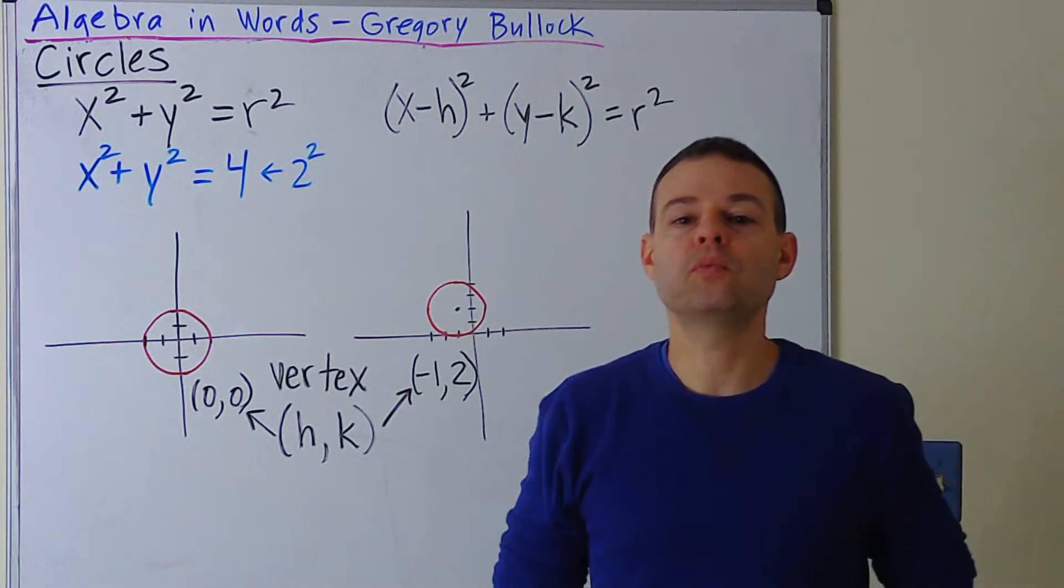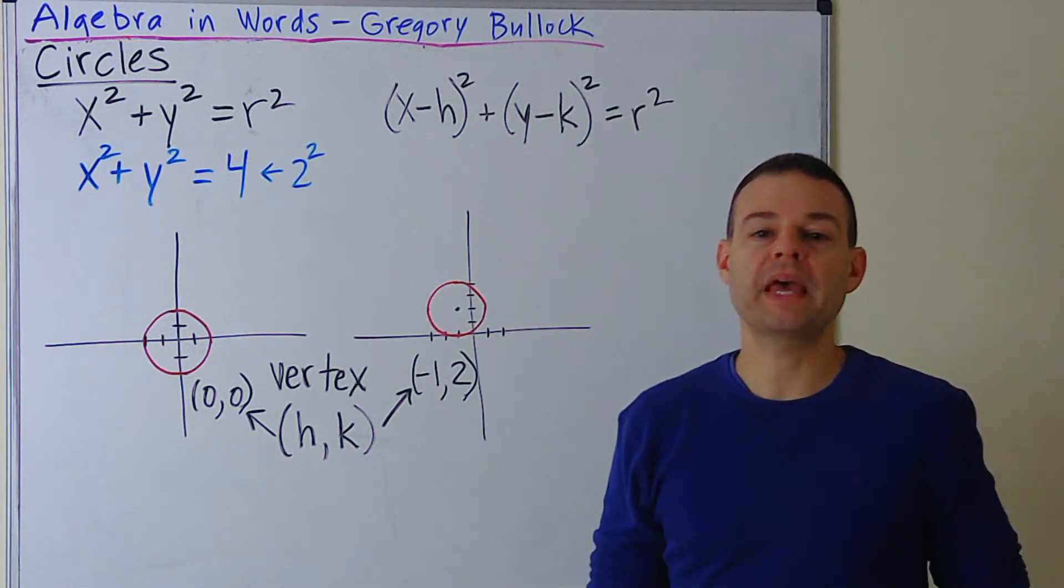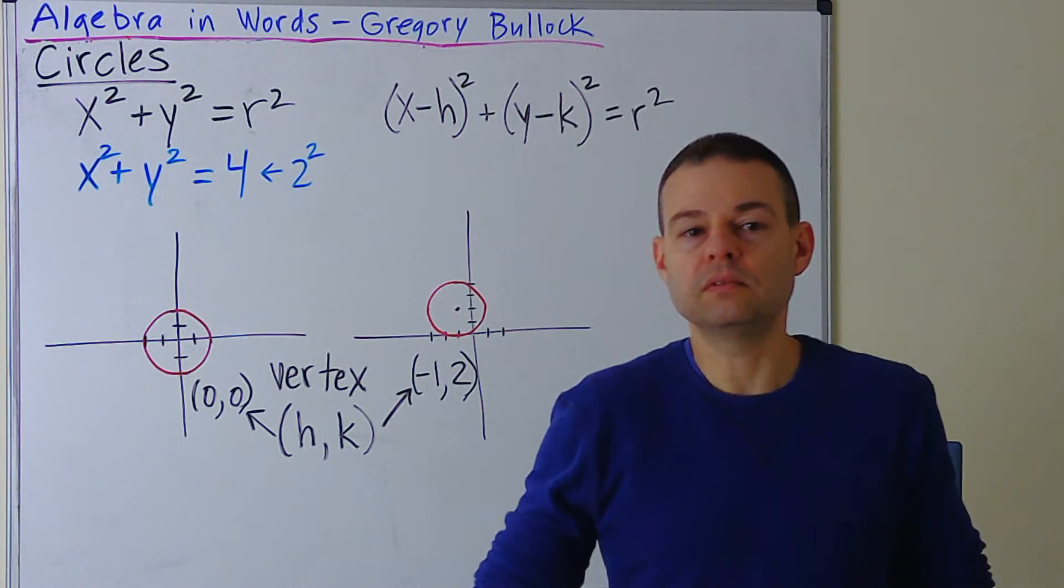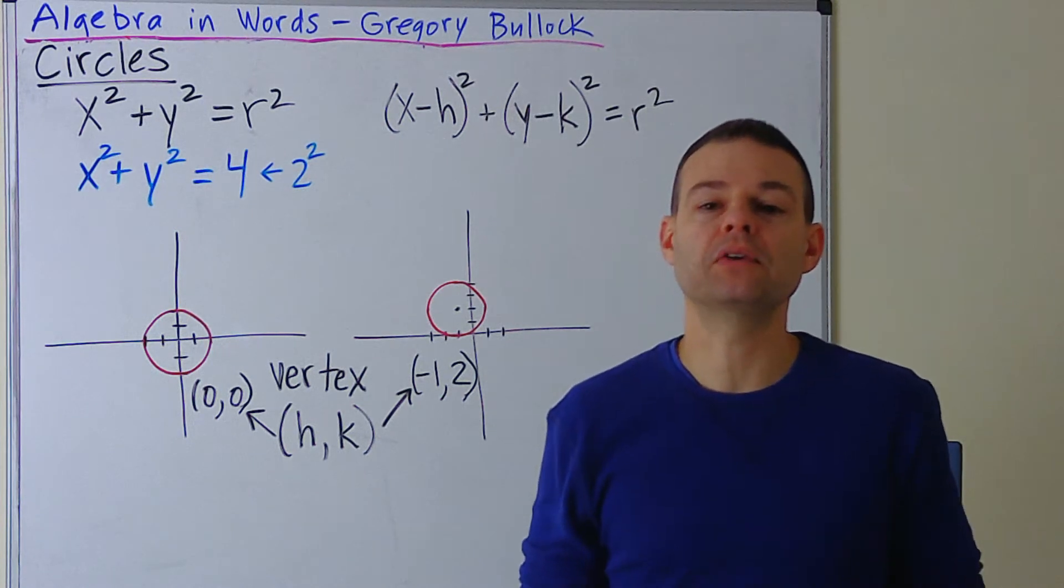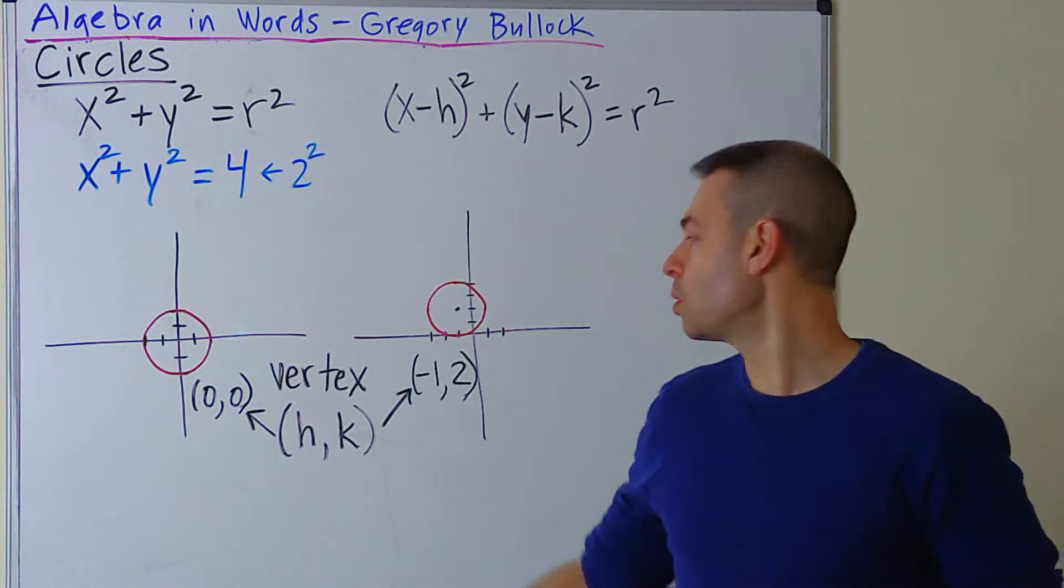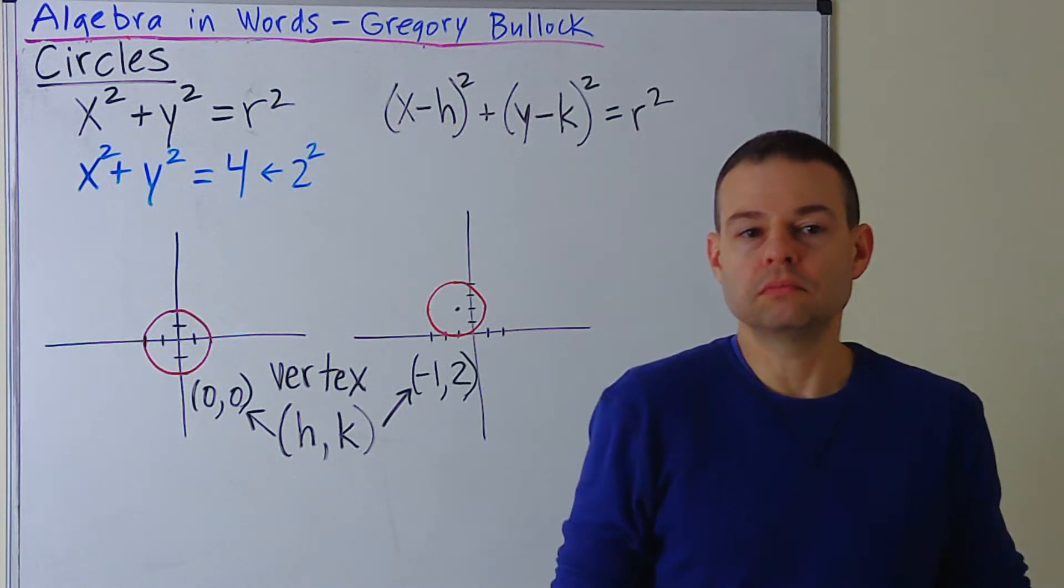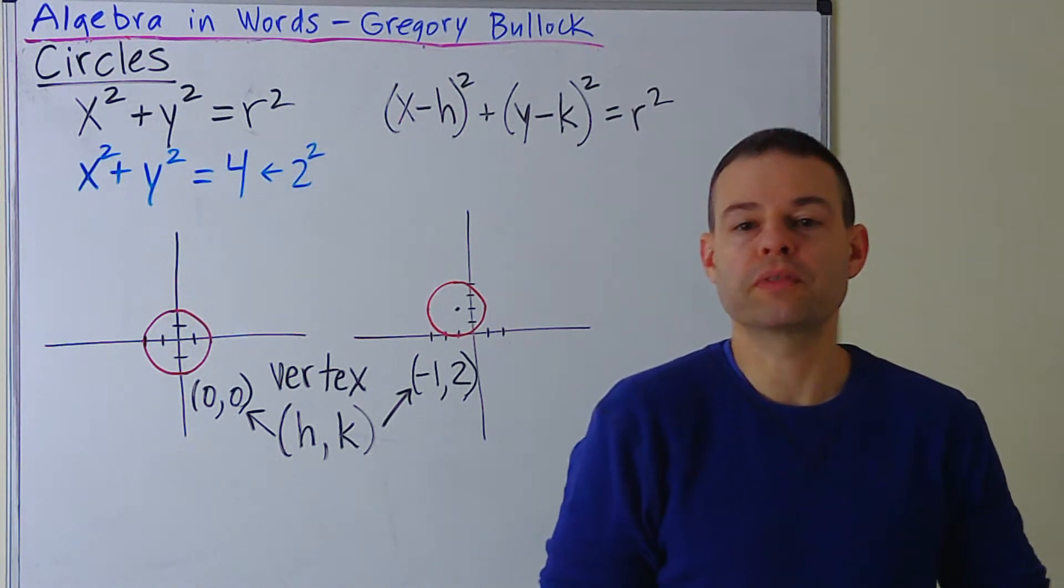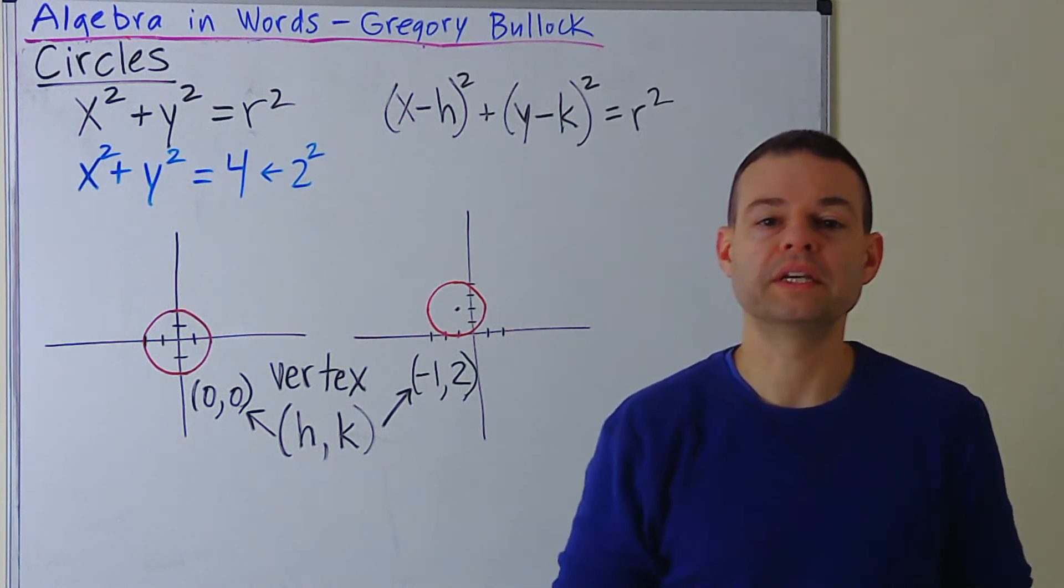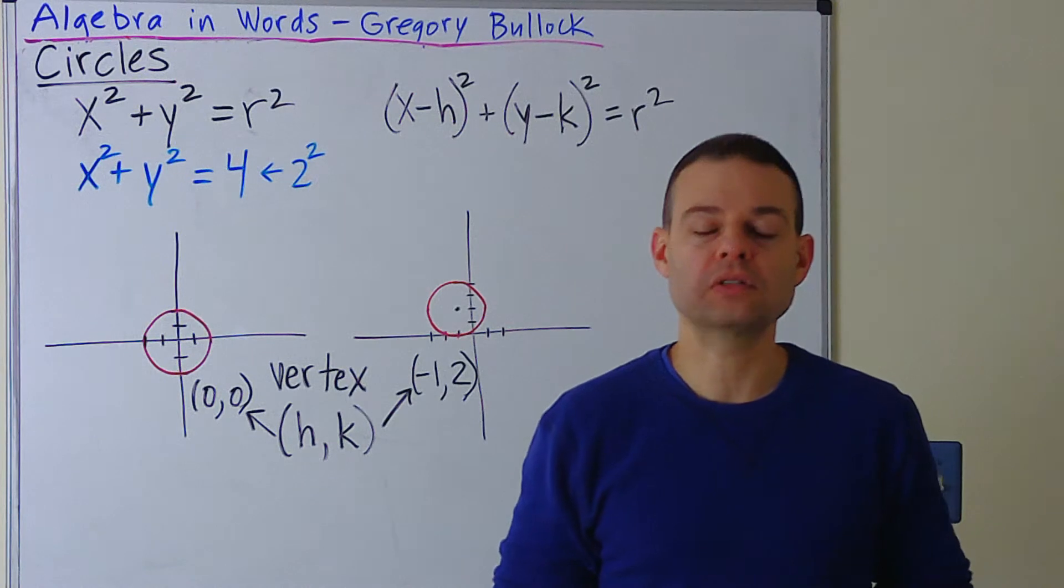And just like when we did the vertex for parabolas in previous videos, the vertex still goes by the form (h,k), where h represents the x value and k represents the y value. But what h and k really are is the shift from the origin (0,0). So since this one is at the origin, in other words, the vertex is the origin.